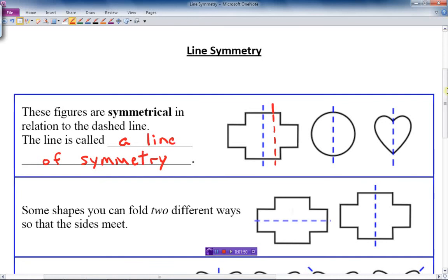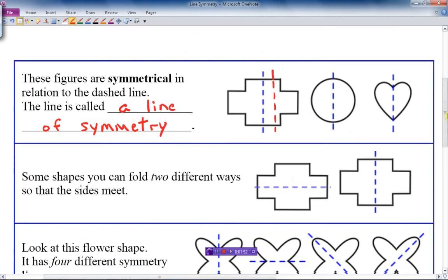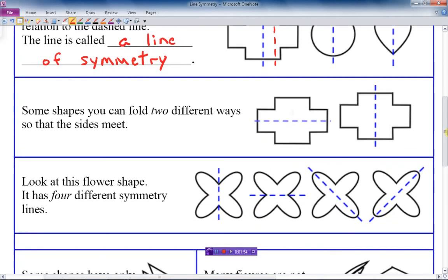It can have two lines of symmetry. Here we have a horizontal line of symmetry, and we have a vertical line of symmetry. Some cases like this shape here have two lines of symmetry.